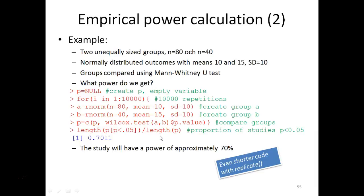So, let's look at an example. Here, we want to compare two groups of unequal size: 80 individuals in one group and 40 in the second group. In these groups, you assume a normally distributed outcome with a mean value of 10 in the first group and 15 in the other group, and the standard deviation of 10 in both groups. And you want not to use the t-test, but the Mann-Whitney U test, or rather the Wilcoxon test, the unpaired Wilcoxon test. So, what power would we get?